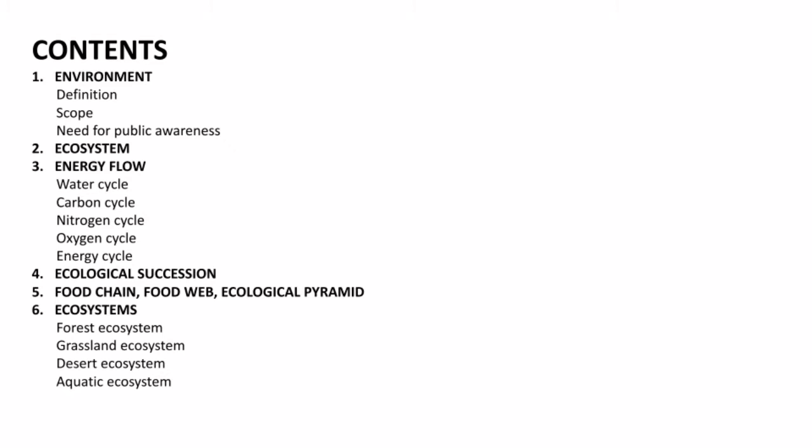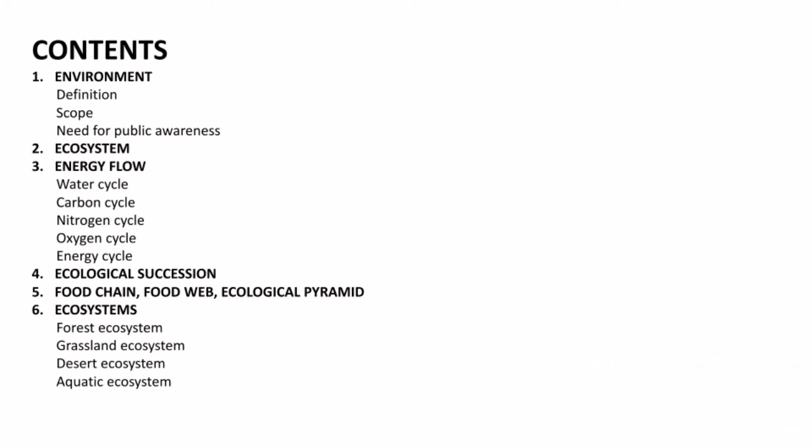The contents of this video are: Environment, under which we will have definition, scope, and need for public awareness; then Ecosystem; then Energy Flow, under which we will have 5 cycles which are very important; then Ecological Succession; then Food Chain, Food Web, and Ecological Pyramid, which are all important; and then we have ecosystems — forest, grassland, desert, and aquatic. From this there will be one short question coming in the final exam or any internals.